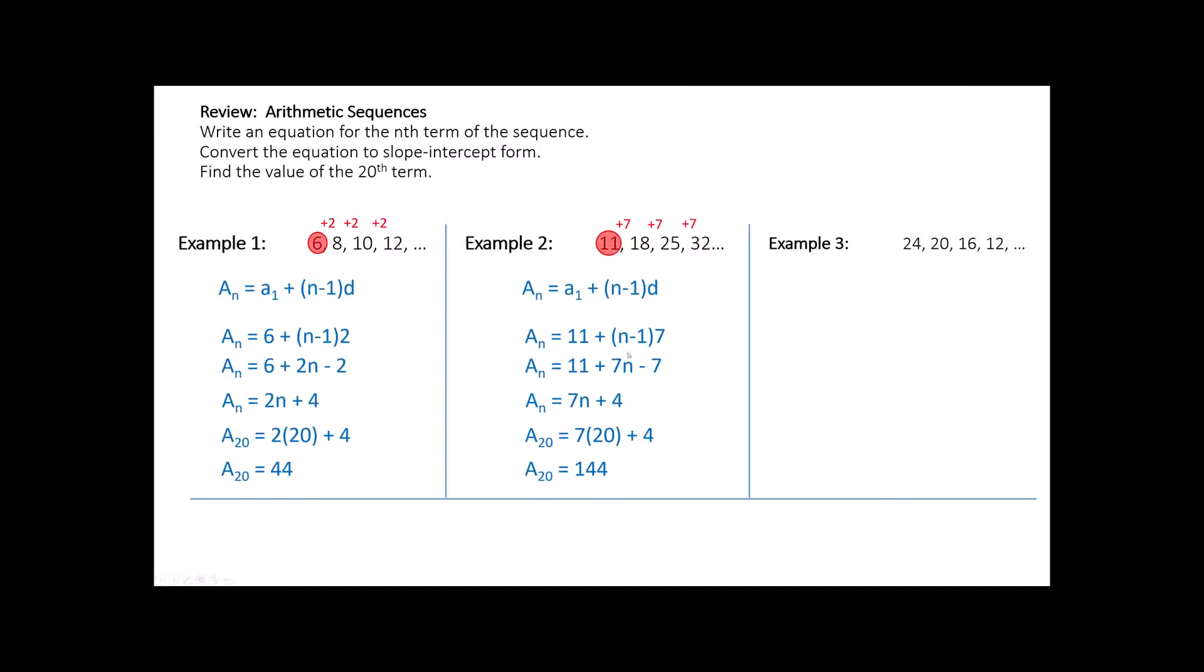If I use my distributive property and combine my like terms, this in slope intercept form is 7n plus 4, so the value of the number in position 20 is going to be 7 times 20 plus 4, or 144. If I go back to this form right here, I start at 11, and I add 19 sevens. Here's one more. The first value in the sequence is a 24, then a 20, 16, 12, decreasing by 4 each time. I started at 24, and I'm going to repeatedly subtract 4. Remember, repeated addition, repeated subtraction is multiplication. Since we're in position 20, I'm going to have a 24, and I'm going to have 19 negative 4s. Or you could use your distributive property and put it in slope intercept form. The value of the number in position 20 is negative 52.